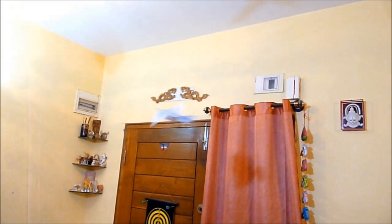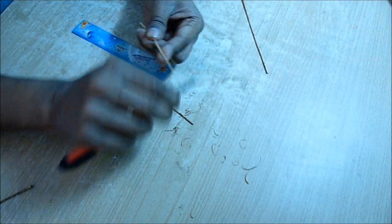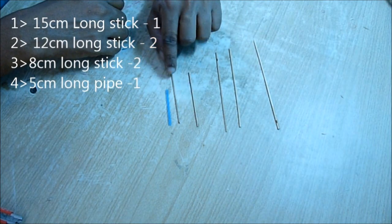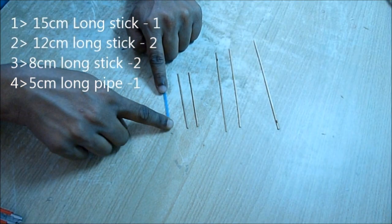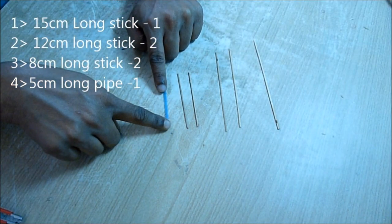Hello there, we are going to make a string-guided flying bird which can fly inside the house like this. For this you need bamboo sticks. The five bent sticks' lengths are shown in the screen. You also need a five centimeter long refill pipe.